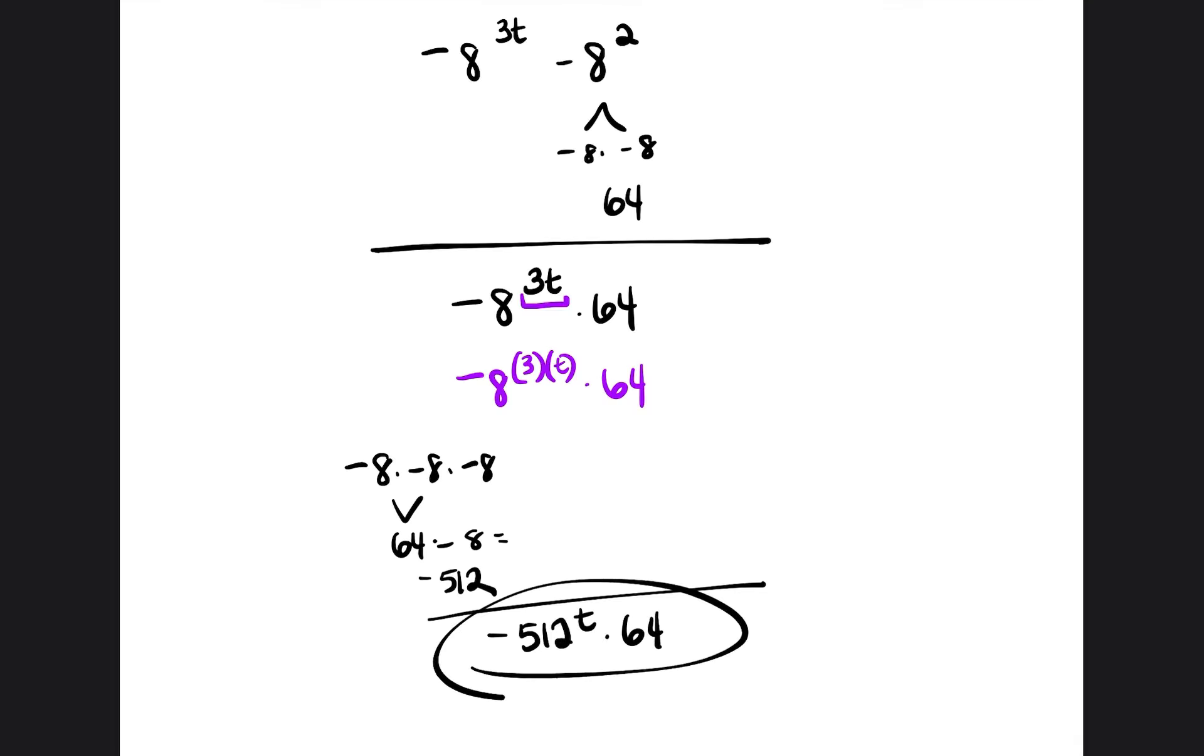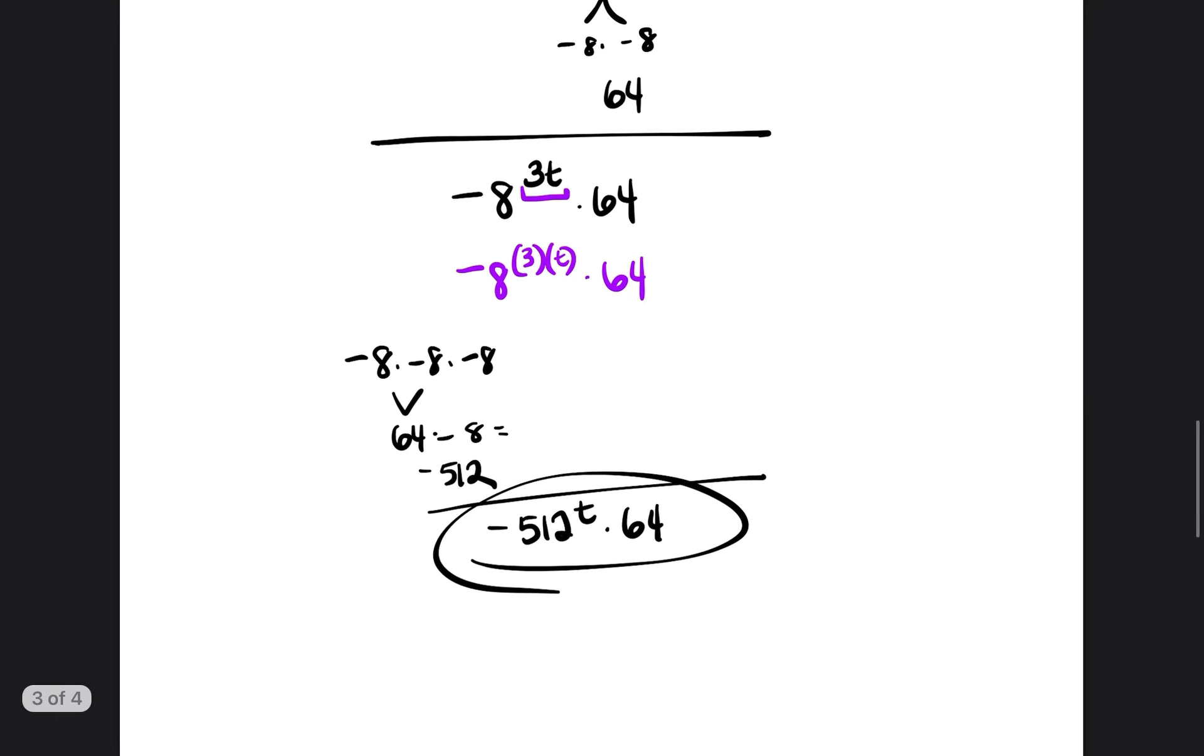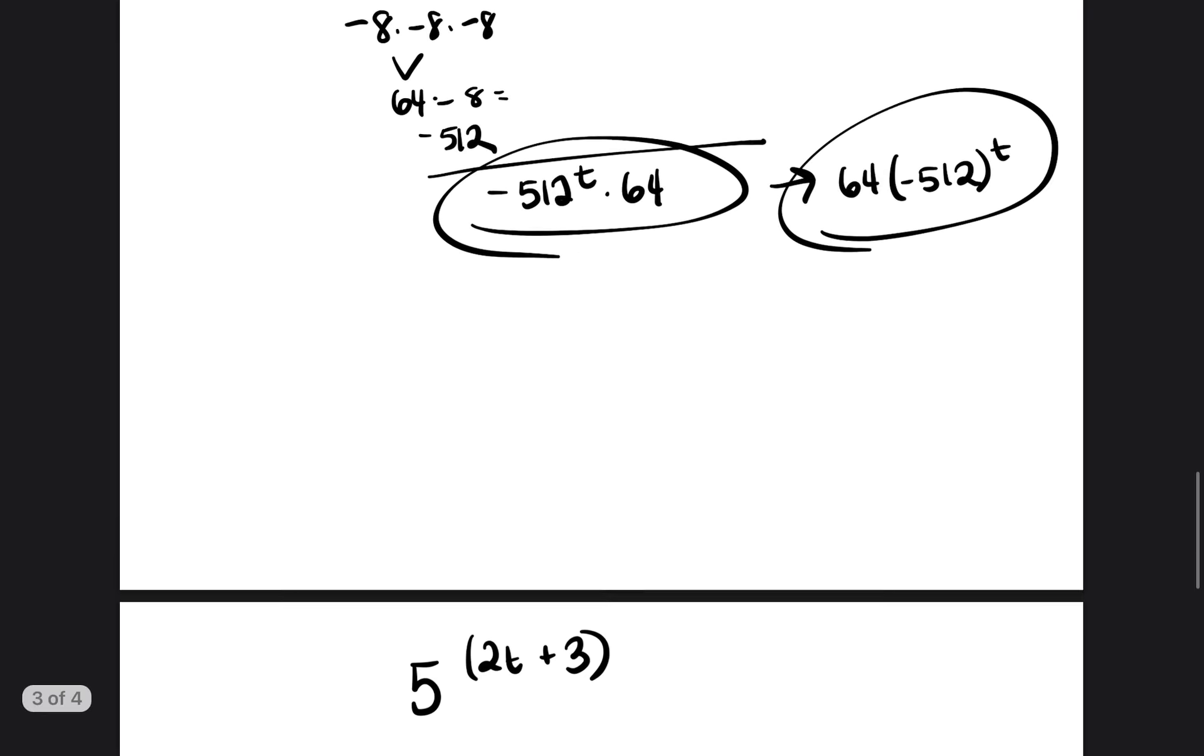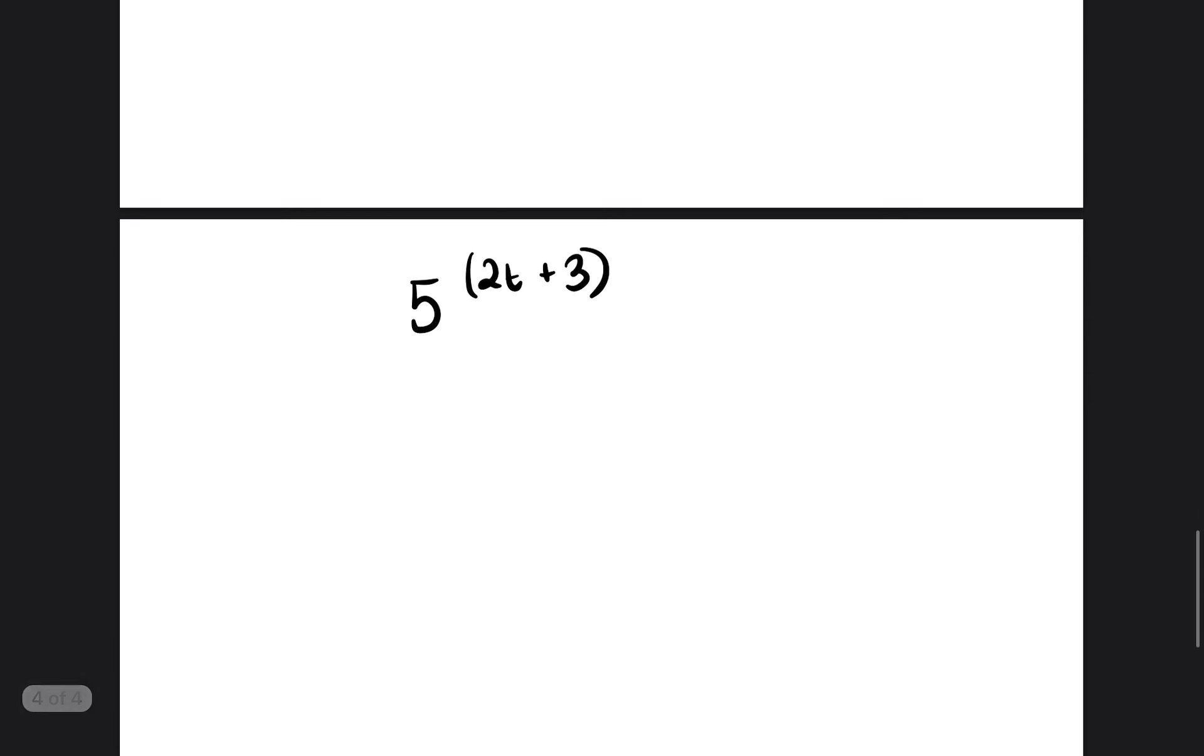And that will be our answer. You can leave it as that, or you can rewrite it as 64 times negative 512 to the t power. All right, let's go ahead and do this again. And you'll see how much easier it is now that we practiced it once.